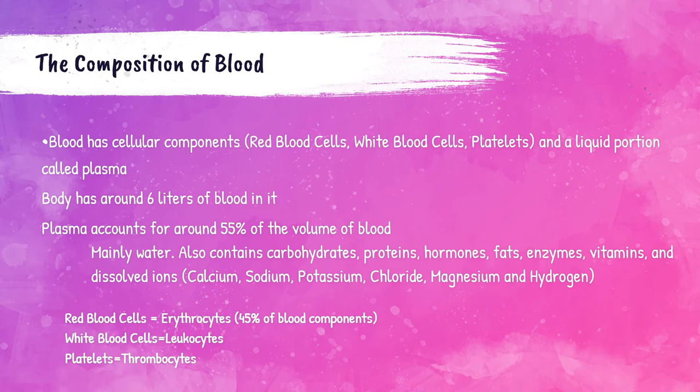Blood is composed of blood cells suspended in blood plasma. Plasma is a yellow-colored fluid that accounts for around 55 percent of the total volume of blood. Plasma is mainly composed of water, but also has carbohydrates, proteins, hormones, fats, enzymes, vitamins, and dissolved ions in it as well.